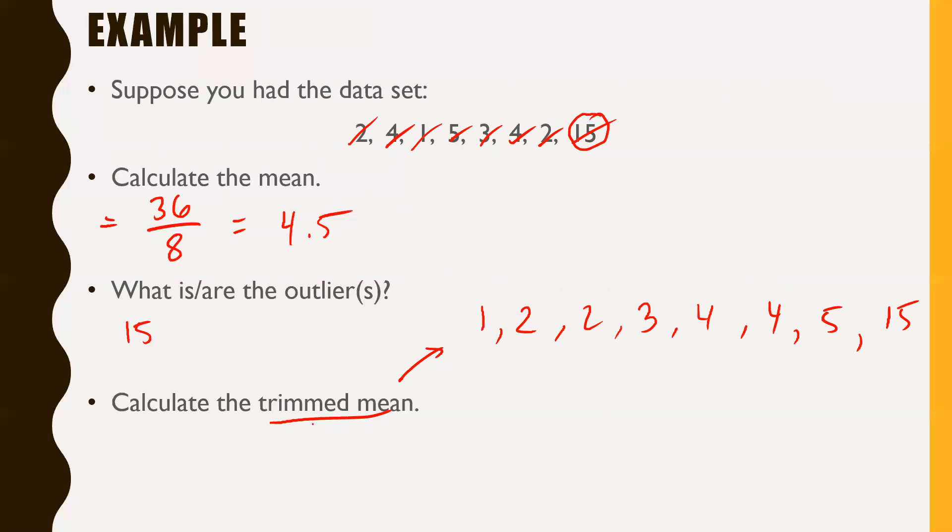The trimmed mean works by cutting off your outlier. 15 is the only outlier, so we can chop that outlier off. But to keep this fair, you have to chop off one number from the bottom as well. I'm going to add just these remaining numbers: 2 plus 2 is 4, plus 3 is 7, plus 4 is 11, plus 4 is 15, plus 5 is 20. This equals 20 divided by the remaining 6 numbers, so 20 divided by 6 gives us 3.3 repeating.